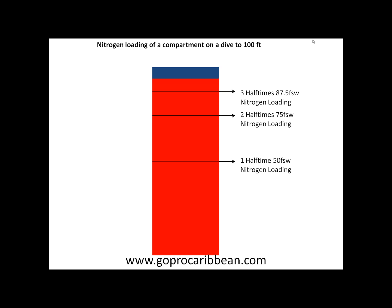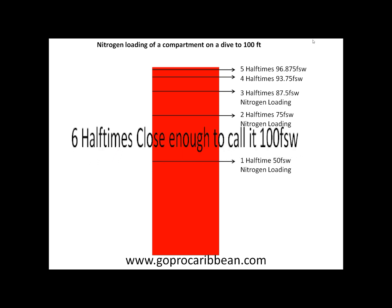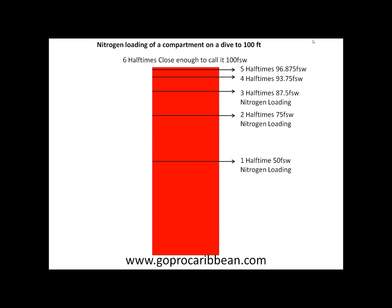After four half-times, we would have 93.75 feet of seawater of nitrogen in our body. These last couple of half-times, the amount of nitrogen going into our body is a very, very small amount. After five half-times, 96.875 feet of seawater of nitrogen — we are very, very close to being in equilibrium. And after six half-times, as far as decompression theory is concerned, we are close enough to equilibrium to call it equilibrium — which in this case would be 100 feet of seawater of nitrogen.